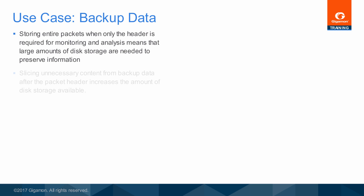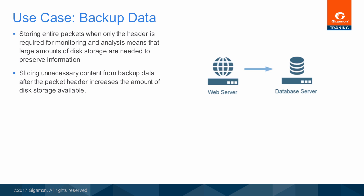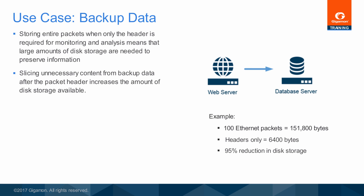Many tools which measure network performance only need to see packet headers, so removing the data payload improves tool throughput by allowing the tool to receive more packets. To preserve performance information but not consume network or forensic recorder resources with the contents of the backup, it is possible to slice backup traffic right after the packet header. For example, monitoring 100 full-size Ethernet packets would require 151,800 bytes of disk storage in full, but only 6,400 bytes if just the packet headers were retained — a 95% reduction in disk space used.